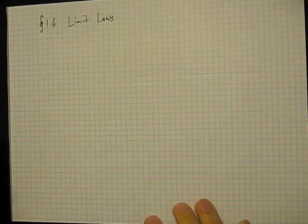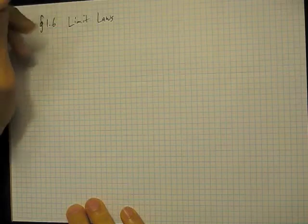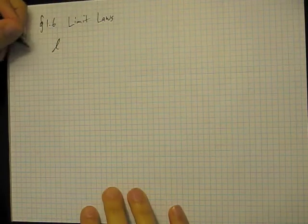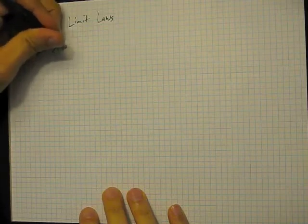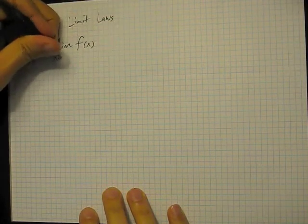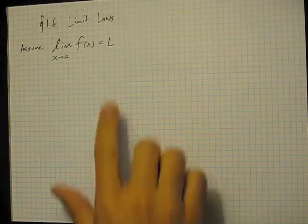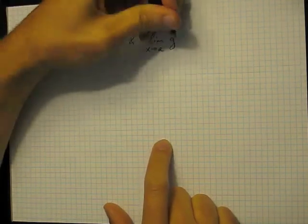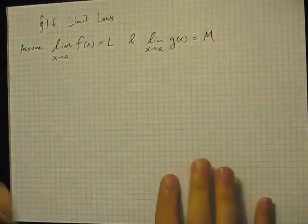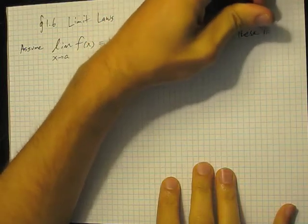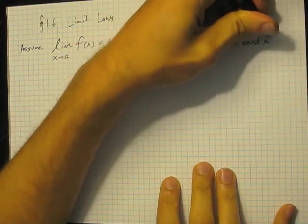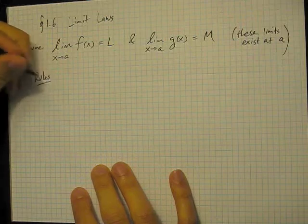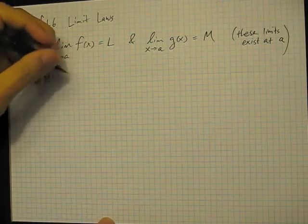So this next section, section 1.6, is the section on limit laws. This is going to give us a series of tools for calculating limits of functions. Before we do anything, we assume that the limit of f as x goes to a exists, and the limit as x goes to a for another function g also exists. So these limits exist at a. The rules we use for computing limits start as follows.